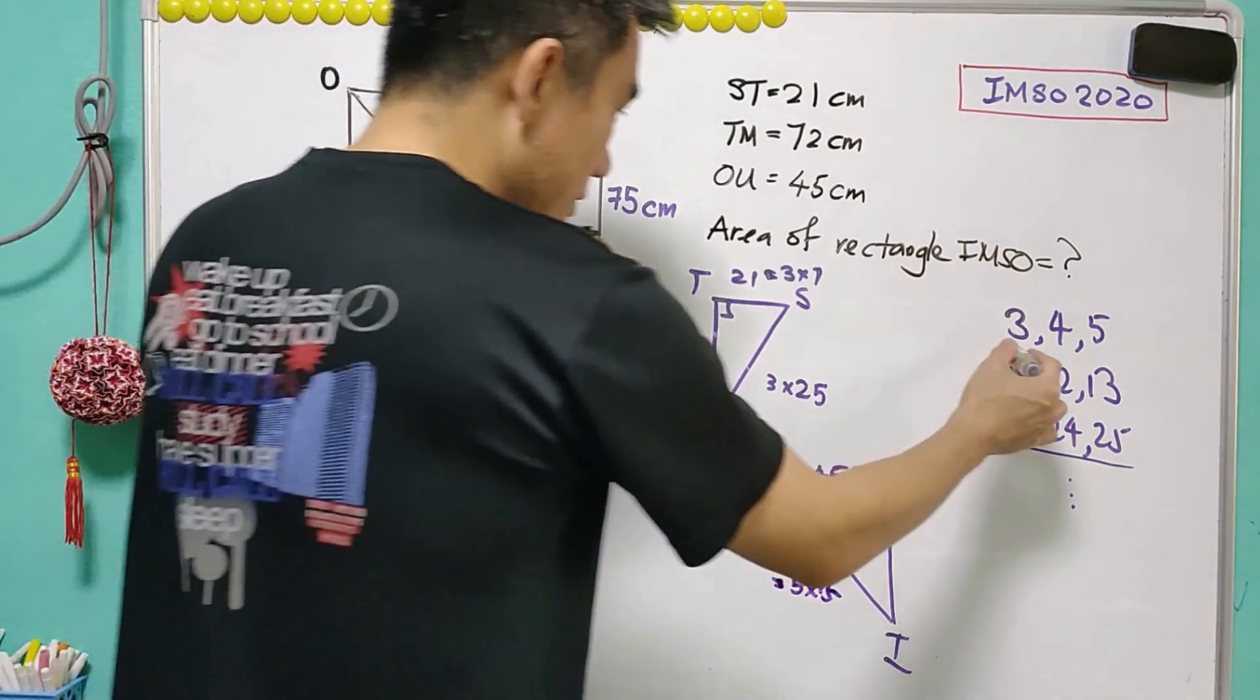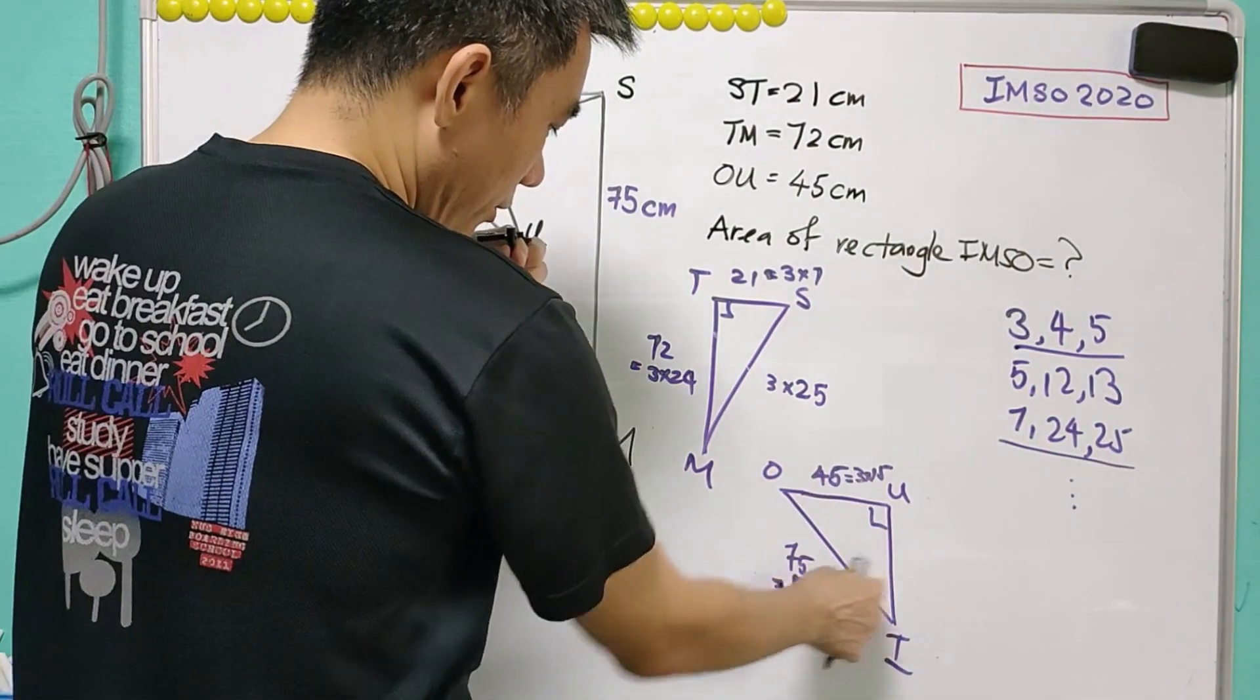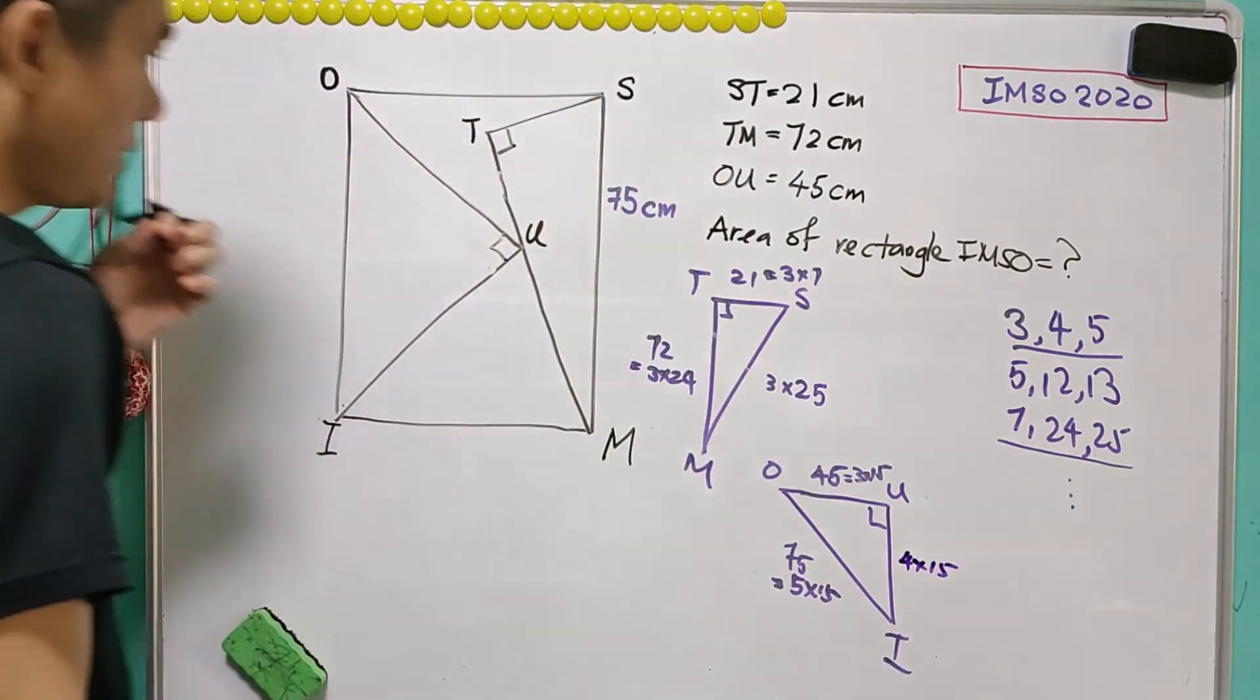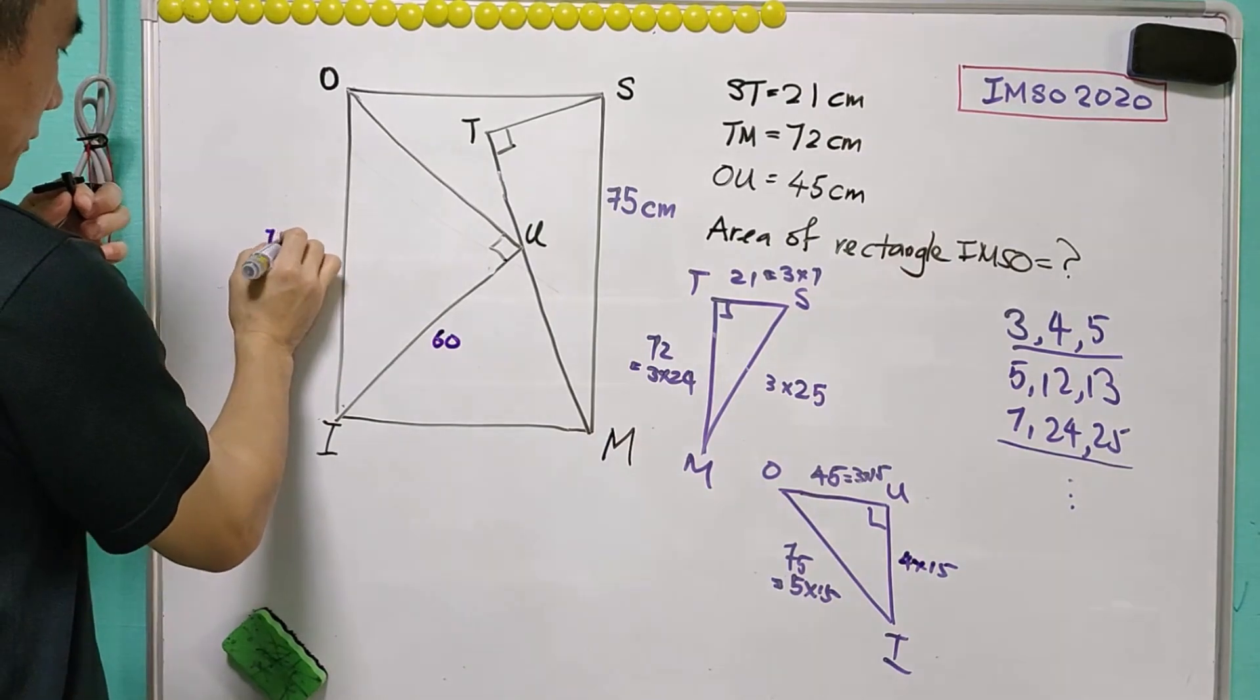In this case, we are using Pythagorean triples 3-4-5, so this is 4 times 15. Then we know that this is equal to 60, this is 75, 45.